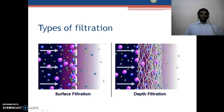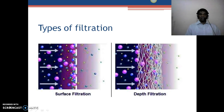Talking about types of filtration, there are two kinds: surface filtration and depth filtration. For surface filtration, screens or cotton cloth used for separation are examples of surface filtration. For depth filtration, candles or ceramic filters used in household filtration units are known as depth filtration.